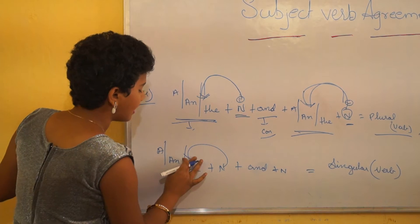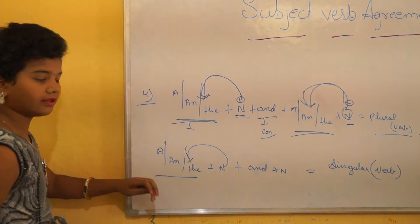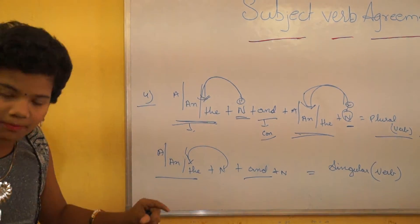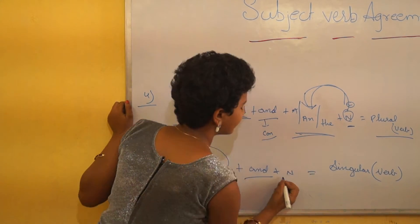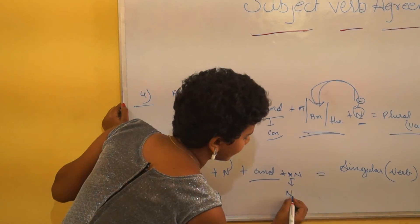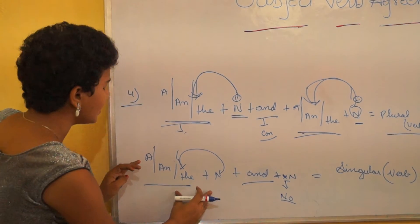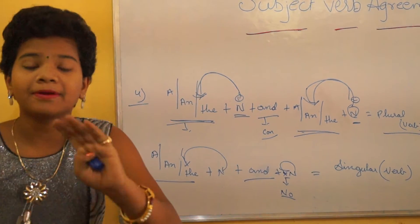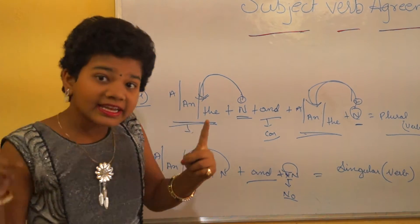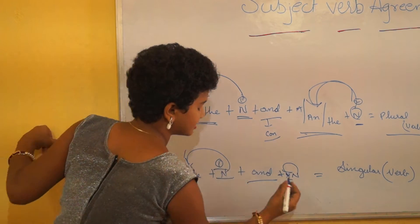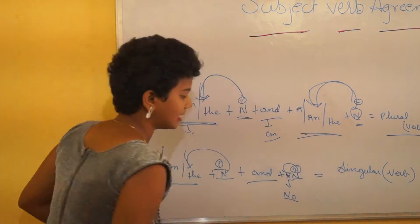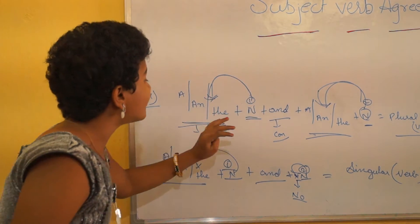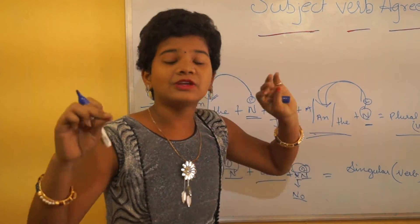However, if there is an article before the first noun but no article before the second noun, we should use only a singular verb. So: article before first noun plus no article before second noun equals singular verb. Article before first noun plus article before second noun equals plural verb.